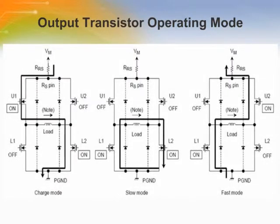When current flows in the direction of the arrows as shown in charge mode, U1 and L2 are on and U2 and L1 are off. In slow mode, L1 and L2 are on and the rest are all off. In fast mode, U2 and L1 are on and the rest are all off. When the current flows in the opposite direction, in slow mode it is the same as earlier; in charge mode, U1 and L2 are off and U2 and L1 are on; in fast mode, U2 and L1 are off and the rest are off.